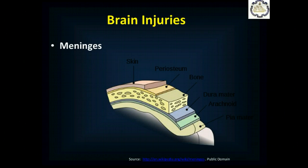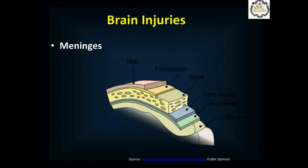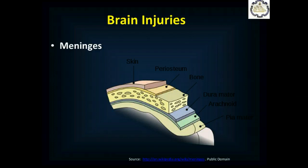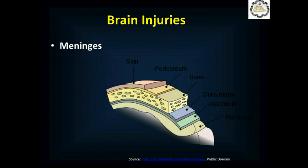Directly under the skull bones lie the meninges — three layers: the dura mater (tough mother), the arachnoid (spider web-like), and the pia mater (the thin interior-most lining). These meninges are basically sacs that surround the brain and spinal cord. When we talk about focal injuries, we often discuss them in relation to the meninges and where blood accumulates. The space between the skull and the dura is epidural. The space between the dura and the arachnoid is subdural. The space between the arachnoid and the pia mater is the subarachnoid area.